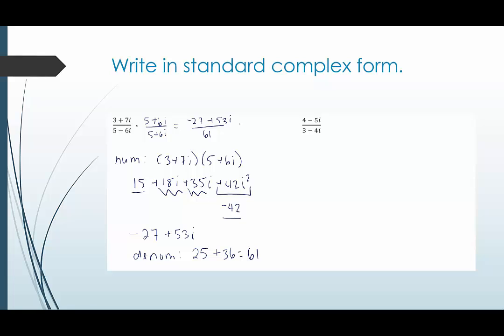And again if you need to split them up you can split them up. That would be negative 27 over 61 plus 53 over 61 times i. Just make sure that i, just make sure that that i stays off to the side. It's not part of the denominator right. It's behind the fraction.